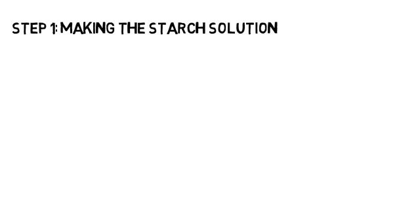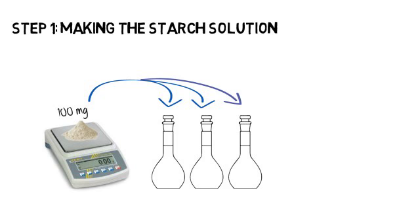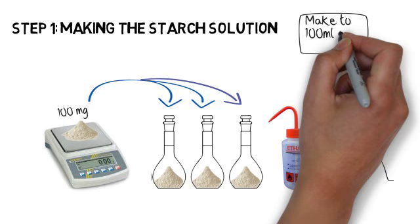Step one, making solutions. Measure 100 mg of powder of each sample and each standard into three 100 ml flasks. Add 1 ml ethanol to wet the starch and help dissolve lipids. Shake, add 9 ml of sodium hydroxide and then make each to 100 ml.